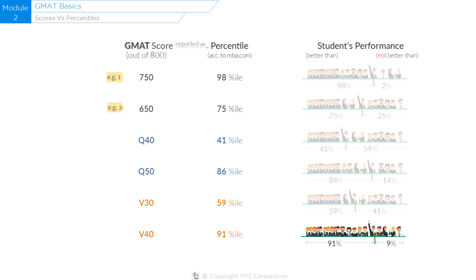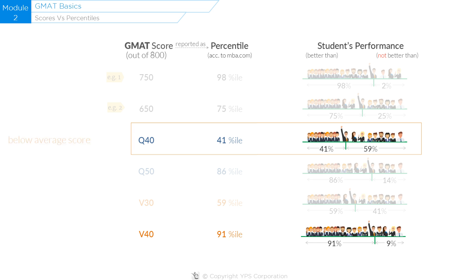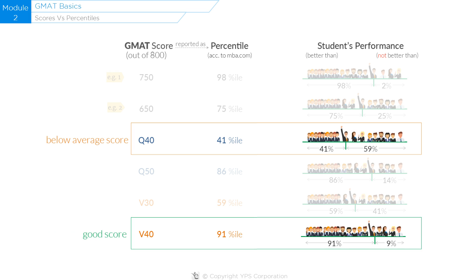Now notice the obvious difference between Q40 and V40. A score of 40 on quant is a below-average score — this student performed better than only 41% of people. But a score of 40 on verbal is a good score — this student performed better than 91% of people who took the exam. We hope you now have a good understanding of what percentiles mean in the context of GMAT scores.